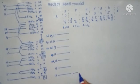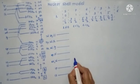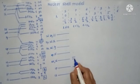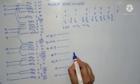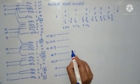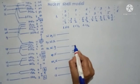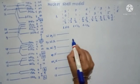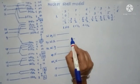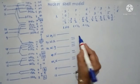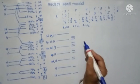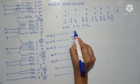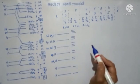Now, 1s and 1p will remain as they are. Then 1d and 2s will be shifted relative to each other. 1f is there, 2p will be nearby, then 1g, 2d, and 3s together. Then 1h, 2f, and 3p. Similarly, 1i, 2g, and 3d follow.